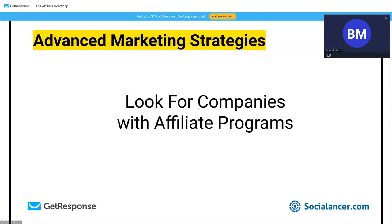One of my key requirements: when someone contacts me about a promotion and they only offer a one-time commission — just for bringing a sale — I'm not interested. I want a recurring business, and when a company understands that, it means they understand me as a publisher. You can search Google for 'company name affiliate program' — for example, 'GetResponse affiliate program' — and register there to start working with the right companies.